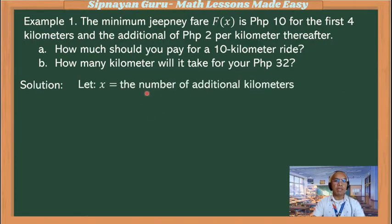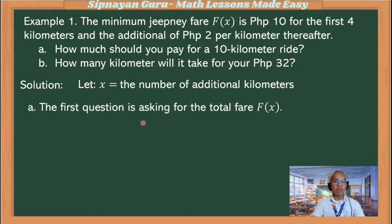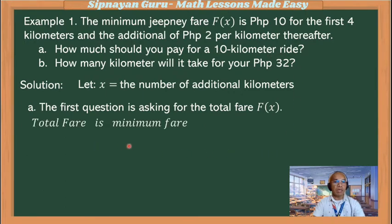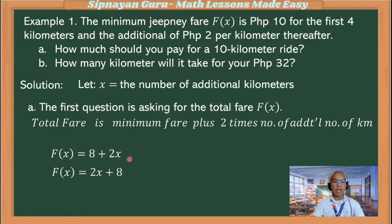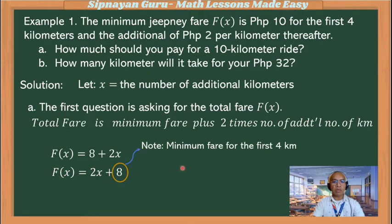For the solution, we will let x represent the number of additional kilometers. For the first question, it is asking for the total fare, represented by f(x), for a 10-kilometer ride. The total fare is the minimum fare plus 2 times the number of additional kilometers. So the total fare is f(x) = 8 + 2x, which simplifies to f(x) = 2x + 8. Note that this 8 is the minimum fare, good for 4 kilometers.